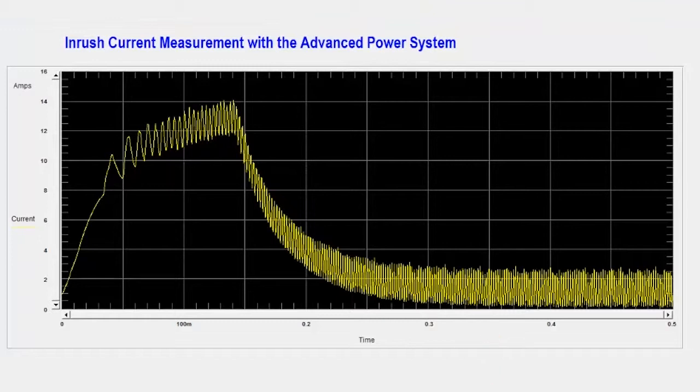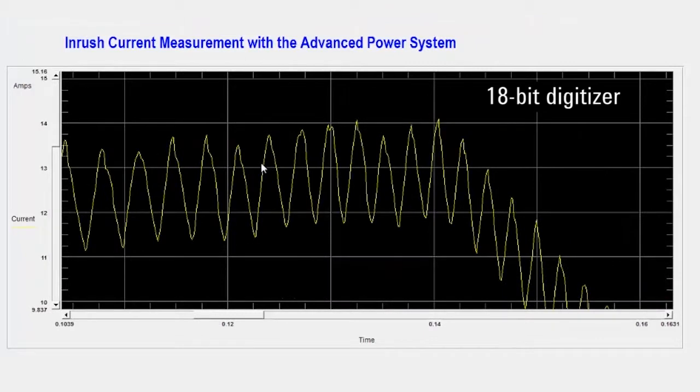Now the great thing about capturing this with the APS is we have an 18-bit digitizer. We get extremely high resolution so we can easily zoom in on any part of this current profile. Let's zoom in on the peak. Once again, 18 bits of resolution and we have a digitizer that can run at 200,000 samples per second.